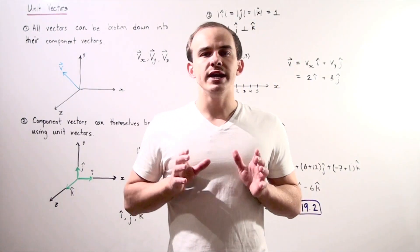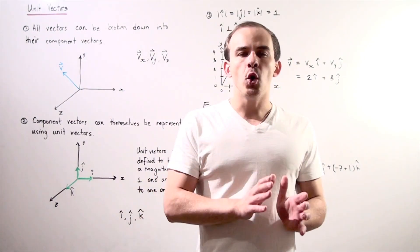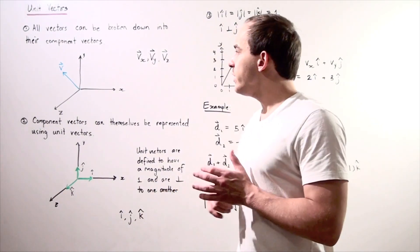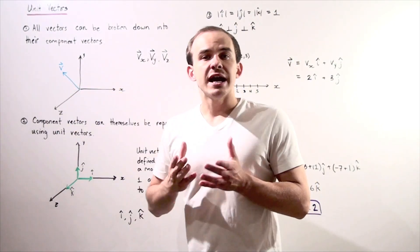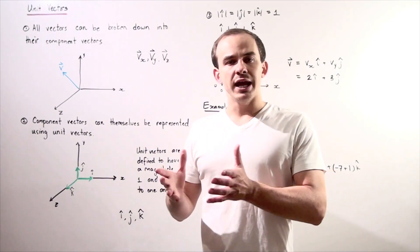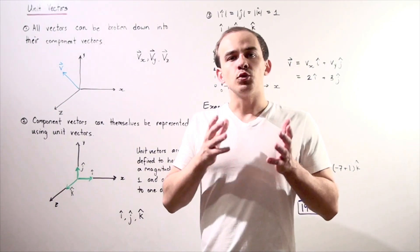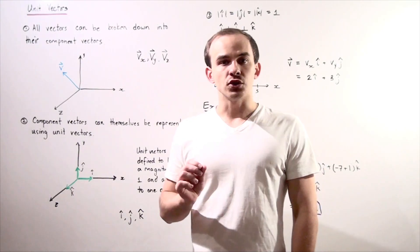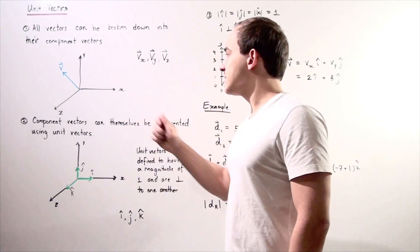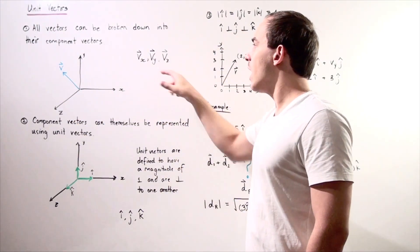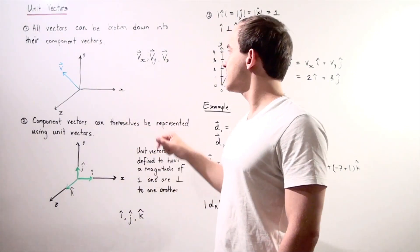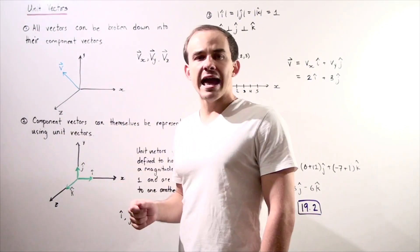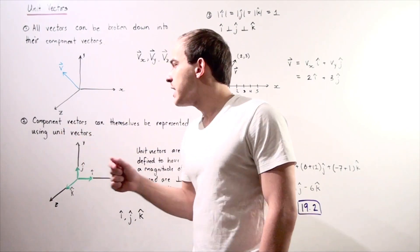All vectors can be broken down into their component vectors, their constituents. For example, if we have a vector that lies in our three-dimensional plane, we can break it down into three one-dimensional component vectors: Vx, which lies along the x-axis, Vy, which lies along the y-axis, and Vz, which lies along the z-axis coming out of the board.